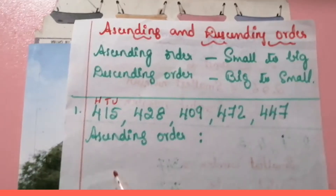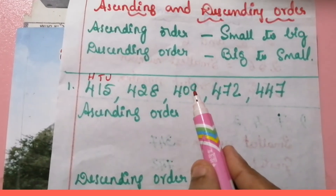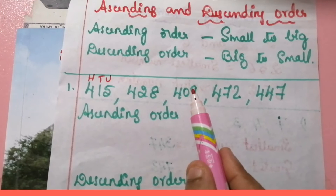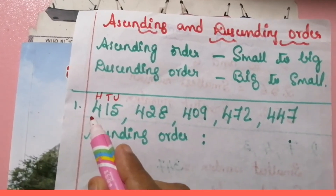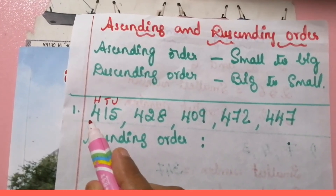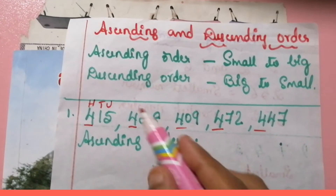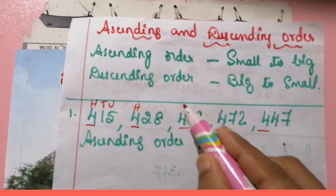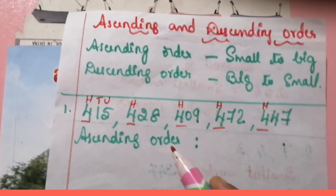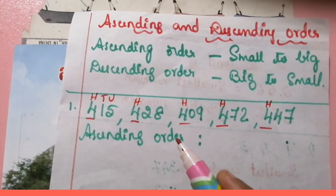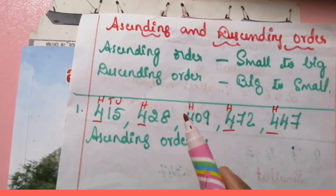So let us take the example. These are the three digit numbers. While comparing the three digit numbers, first we have to compare the digits in the hundreds place. In this example, the hundreds place digits are 4, 4, 4, 4, 4 — these five fours are in the hundreds place. So if the digits in the hundreds place are the same, then we have to compare the digits in the tens place.